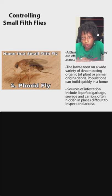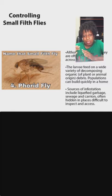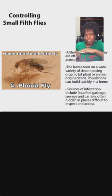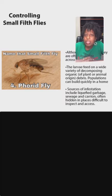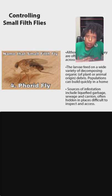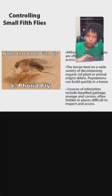Phorid flies are annoying because unlike fruit flies that stay near fruit or fungus gnats that stay near plants, phorid flies will be right there while you're trying to cook, crawling around on everything. They're very annoying. You need to find the source of what is attracting them to get them under control.